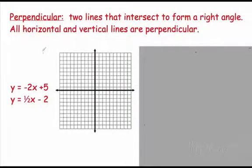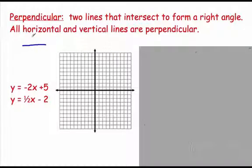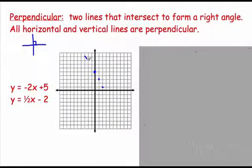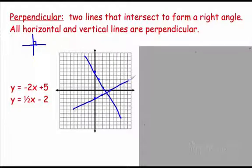Now, parallel and perpendicular kind of go hand in hand. Perpendicular doesn't just mean they intersect — they have to intersect to form a right angle. All horizontal and vertical lines are perpendicular. Think about the x-axis and y-axis — those are perpendicular. Let's graph these two: start at 5, go down 2 over 1. Then start at negative 2, go up 1 over 2. And you can see they form a right angle.